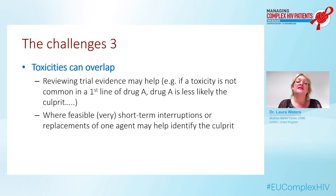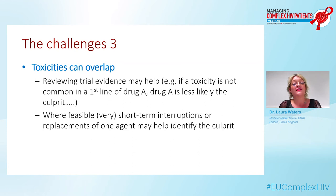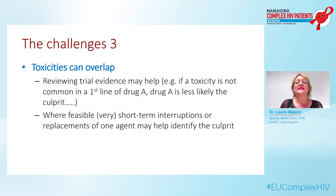The third challenge is that toxicities can overlap. If someone's on multiple drugs, how do you decide which drug is the culprit? You can look across the breadth of clinical trials — if drug A is very uncommonly associated with a given side effect in a first-line study, it's unlikely to be associated with that side effect in more complex combinations. What can help, where feasible, is very short-term interruptions or substitutions of the drug you think may be responsible, to help identify whether it is responsible and whether it's sensible or safe to continue it.